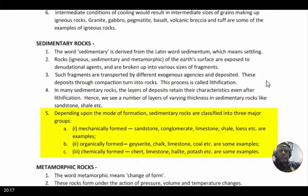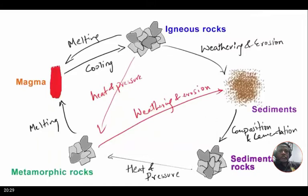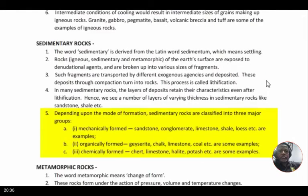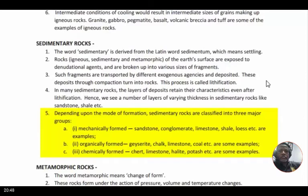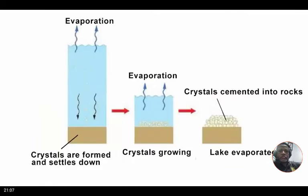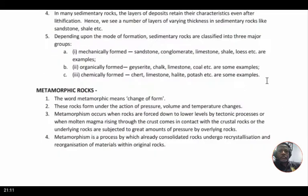Depending upon the mode of formation, sedimentary rocks are classified into three major groups. First, mechanically formed — following a natural cycle where rocks weather into tiny soil debris which accumulate and compact into rock again. Second, organically formed — rocks formed from organic debris such as leaves, roots, and other plant or animal material; limestone and coal contain fossils and are organically formed. Third, chemically formed — rocks formed due to precipitation of minerals from water; for example, evaporation of sea water millions of years ago led to the formation of halite, potash, and limestone.